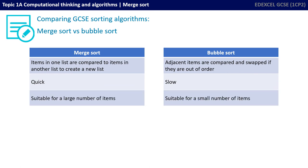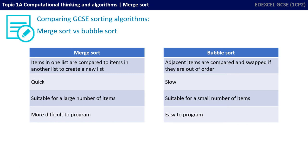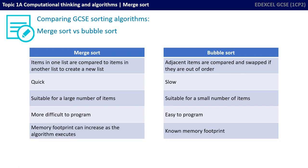A merge sort is therefore a very suitable form of sorting algorithm for large numbers of items, whereas the bubble sort is really only suitable for learning about algorithms or handling a small list of items. On the other hand, merge sorts are a lot more difficult to program, whereas a bubble sort is much easier. Finally, due to the nature of a merge sort, the amount of memory it takes up — the memory footprint — can increase as the algorithm executes. With a bubble sort, we have a known memory footprint.